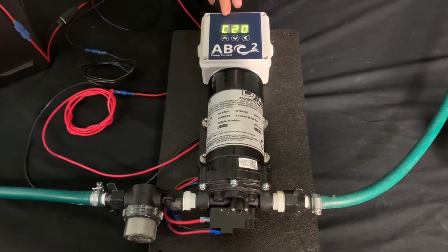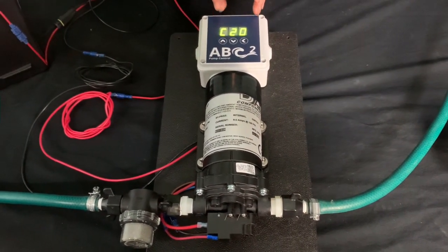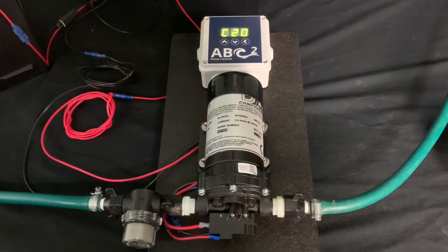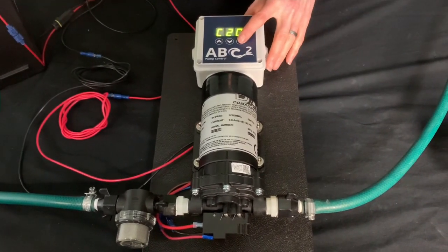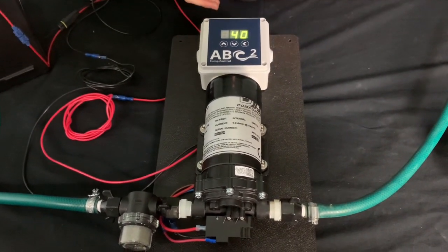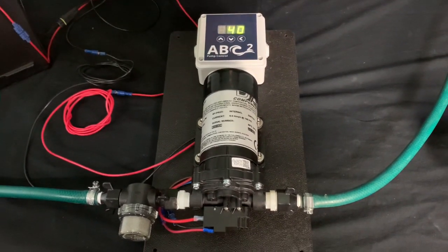Once you've got it flowing, the calibration will be stopped like it is. So this would be calibration at 20. What you need to do is press the right button and that saves the value. So now the controller's calibrated at 20 and I'm running a flow rate of 40.